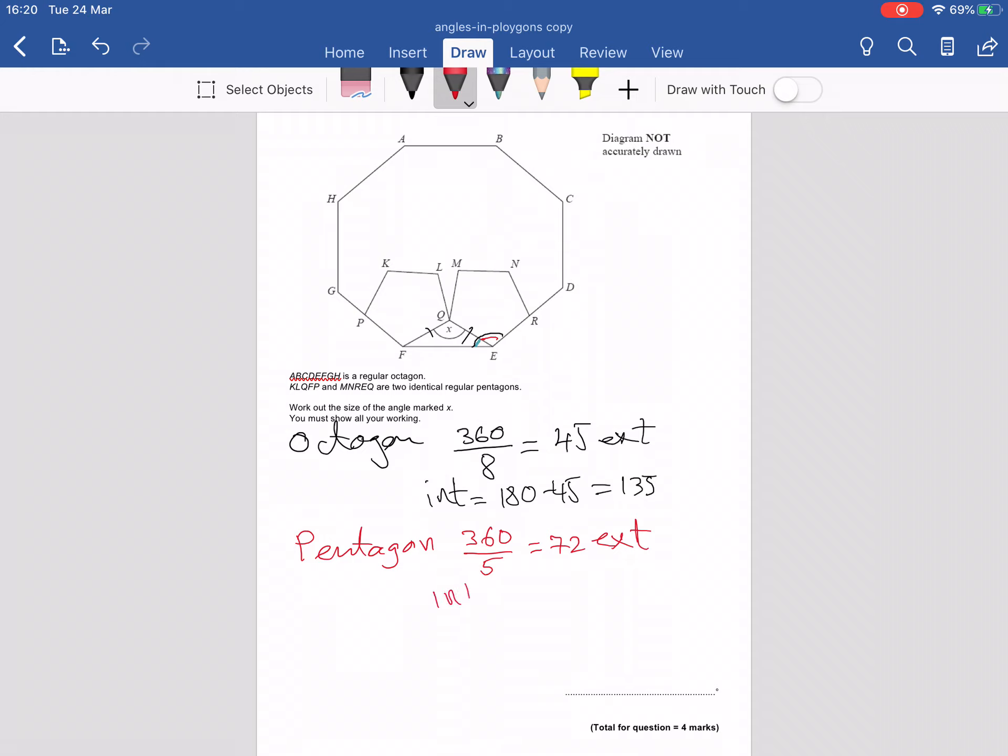So for interior angle, I'm going to do 180 minus 72. My mental math is telling me that this is 108.